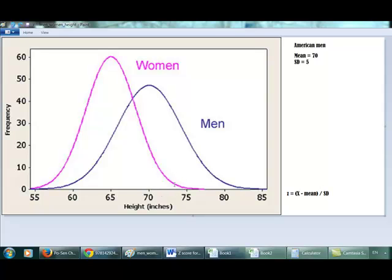In other words, how many standard deviations is 75 away from the mean? What we are doing right now is converting the value of 75 into a z-score.